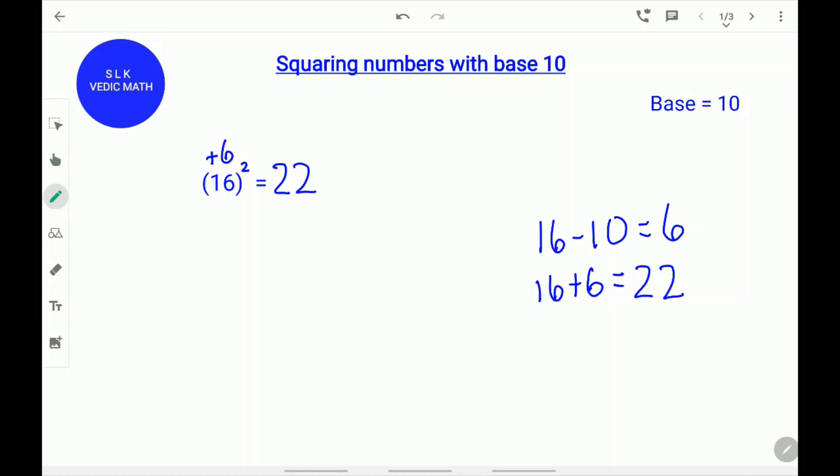Next, we only need to find one more digit because there is only one zero in 10. So, now do 6 square. 6 square is 36.